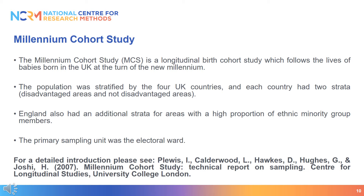In the Millennium Cohort Study, certain subgroups of the population were intentionally oversampled: namely children living in disadvantaged areas, children of ethnic minority backgrounds, and children from the smaller nations in the UK. This oversampling was done to ensure that these groups were adequately represented and therefore to permit analyses of these groups. The Millennium Cohort Study has a pretty complex sample, but studies can get even more complicated.